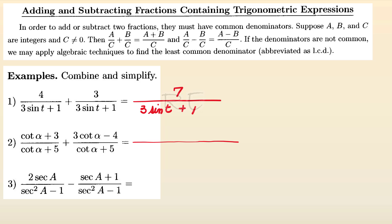For example 2, the denominators are the same: cotangent alpha plus 5. We're just going to add the numerators — cotangent alpha plus 3 cotangent alpha equals 4 cotangent alpha, and 3 minus 4 is negative 1.